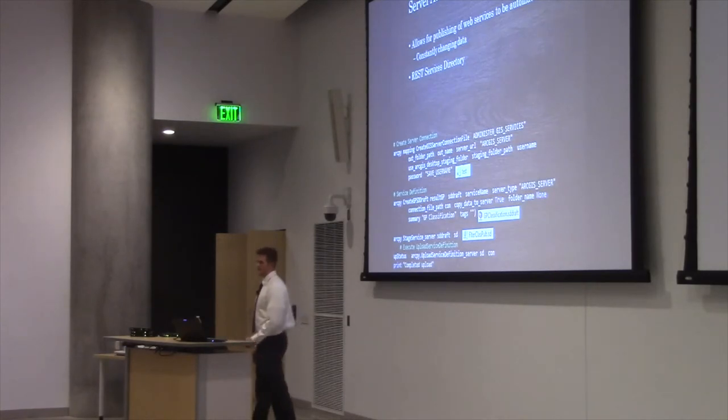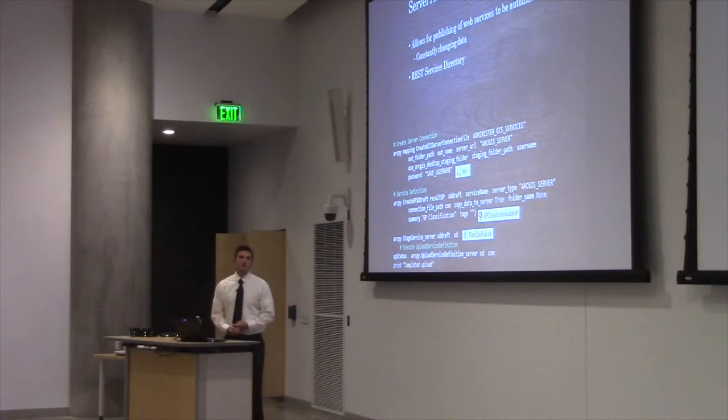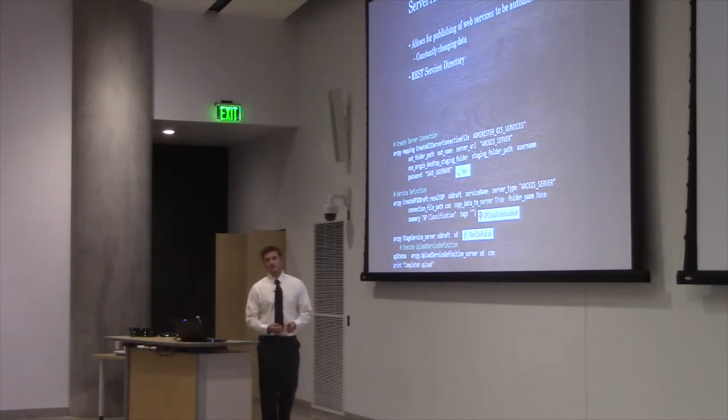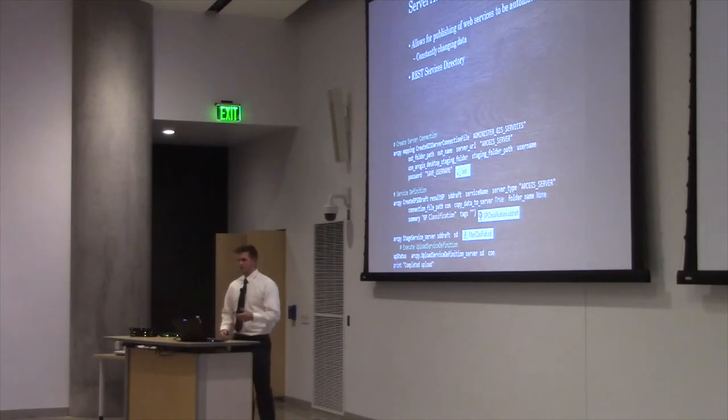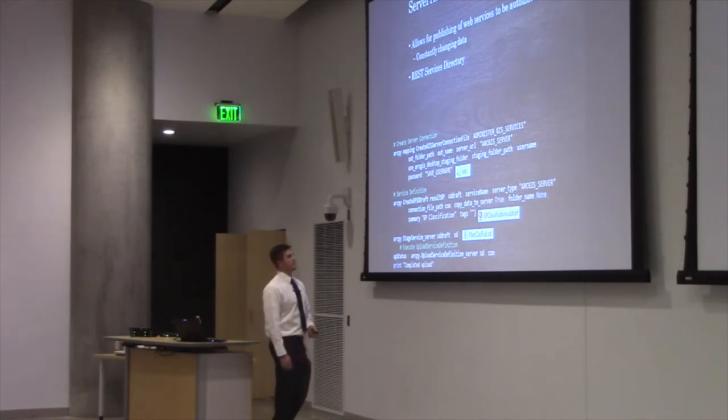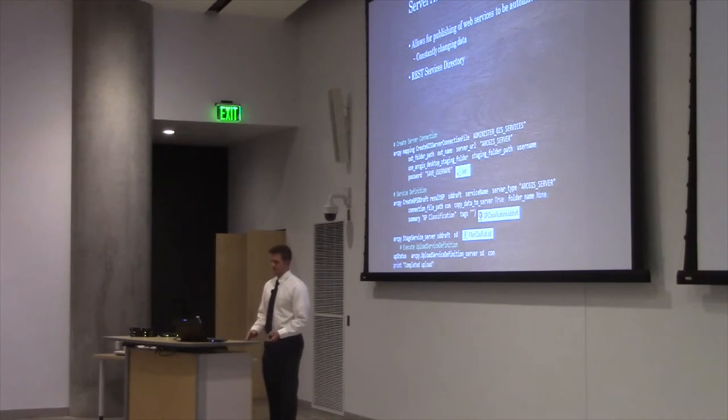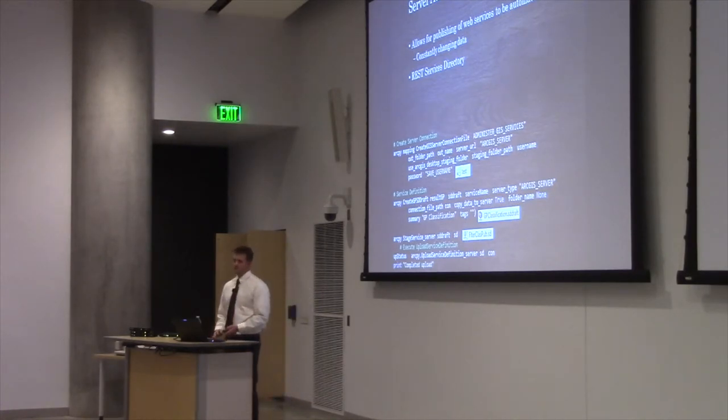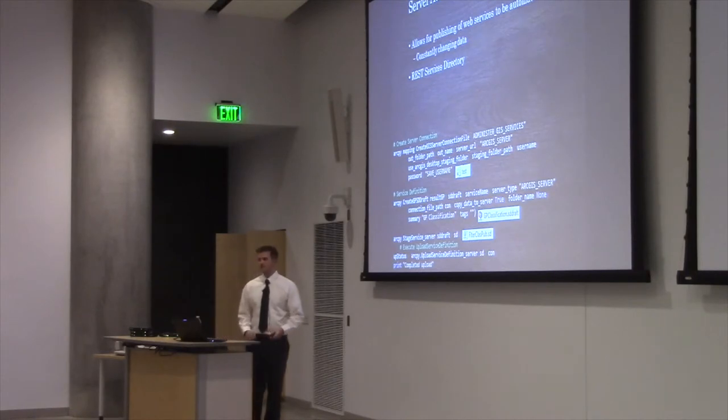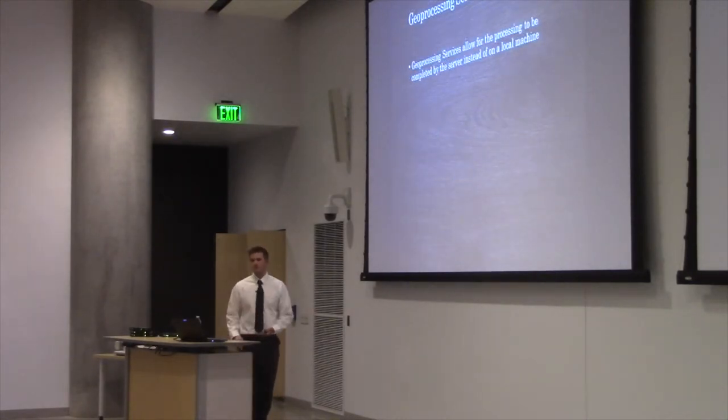From here, this is where you're really going to take your ArcMap desktop-based project and turn it into more of a web-based GIS project. These methods are going to allow you to publish web services. Using this create GIS server connection is going to use that server URL username and password to create a connection to your server instance. Then, it will make this SD draft. The SD draft is basically going to save specifications of your service. Then it will upload the service to your server. From there, it will sit inside your REST services directory. Once it's in your REST services directory, you can start to consume these services using the REST endpoint.